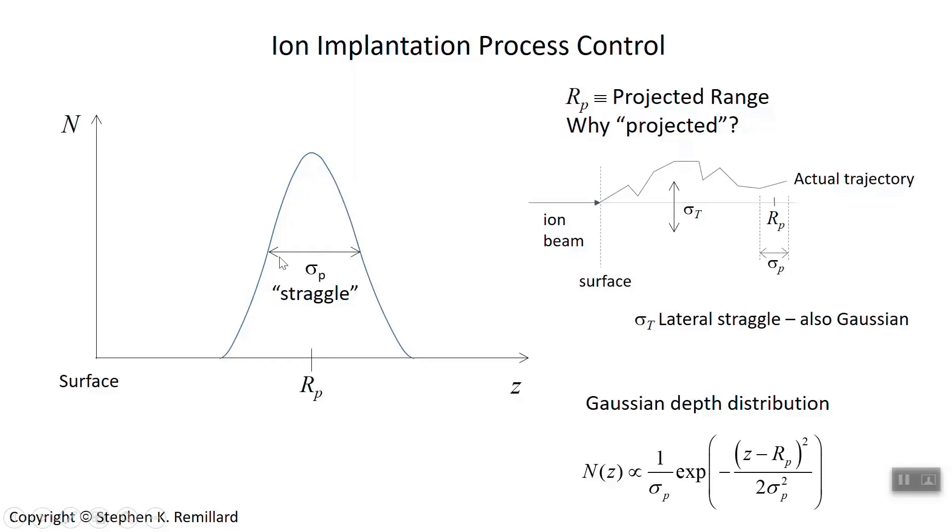The distribution is referred to as a straggle, sigma_p. So you have a certain range—you can only make so thin of a deposition layer. That straggle is in both the forward direction that the ions are moving inside the material (the z direction) and the lateral direction (the x and y direction).